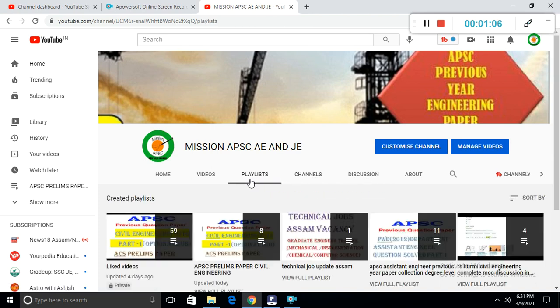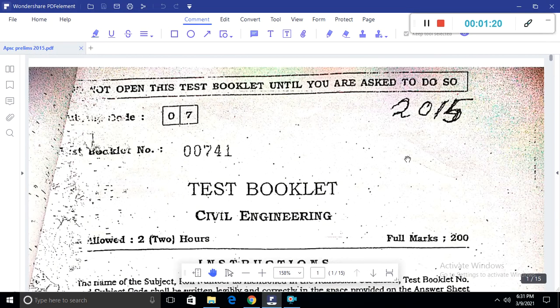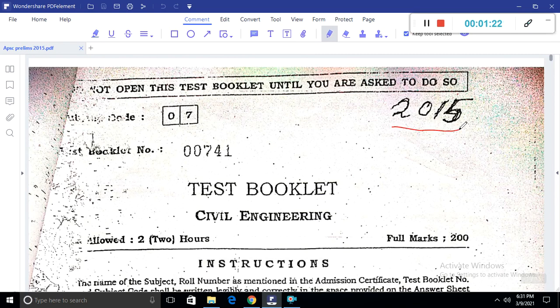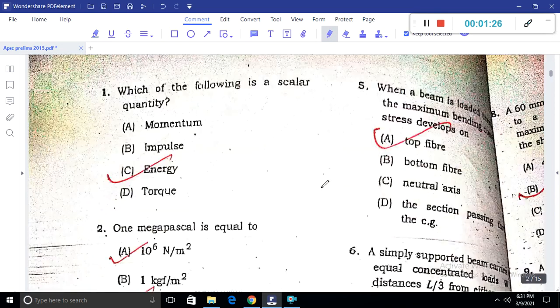Please like, share and subscribe. We will discuss this technical question paper in the video - the 2015 civil engineering department question paper. The first question asks which of the following is a scalar quantity.